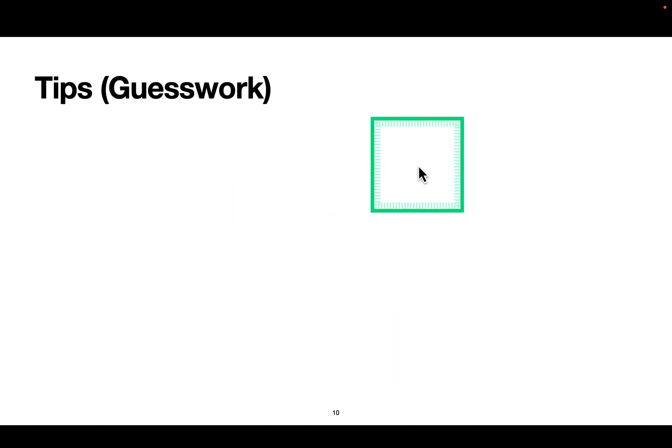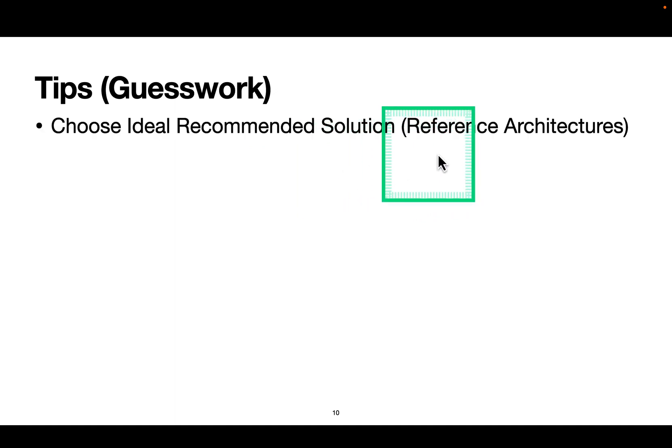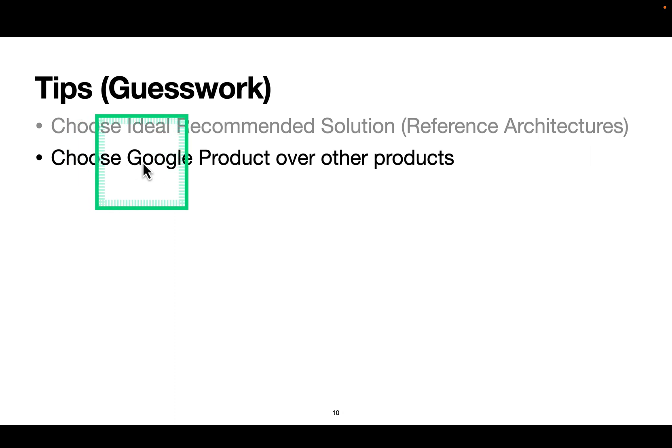Now tips for guesswork: if you have to do guesswork and you're not sure what is the answer, choose ideal recommended solution reference architecture. In case you have A, B, C, D and you have no idea, just choose whichever is the most ideal or recommended solution as per Google documentation. Next, always choose Google products over other products. Of course, this is a Google exam and they would like to recommend or promote or market as much as possible their own products. So if there are Google products versus some other products like open source, definitely choose their product. I'm not saying this should always be the case, but if you have to do guesswork wherein you have no idea what is the right answer and you have no clue, then go with Google product.